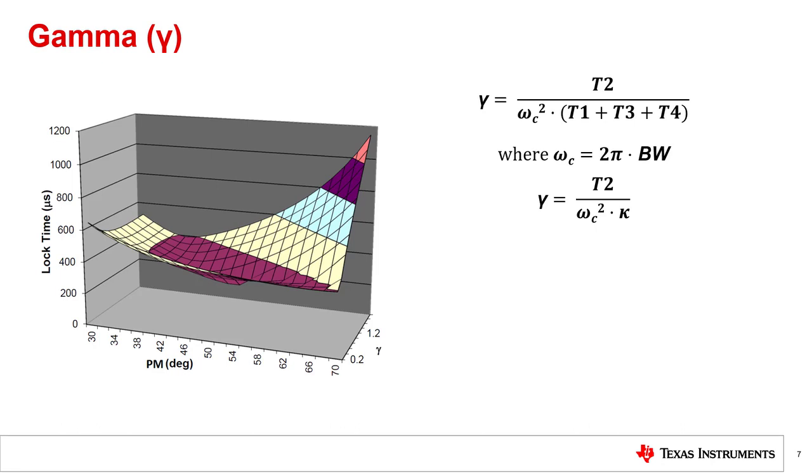So what is gamma used for? Once the loop bandwidth and phase margin are chosen, gamma can be used as a fine adjustment for spurs and lock time. Also, when the loop filter is partially integrated, tweaking gamma allows one to work around restrictions imposed by restricting component values. The valley or the magenta colored portion of the graph represents the best combinations of gamma and phase margin. When gamma is too low or too high, the lock time starts to increase.